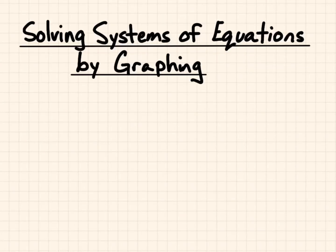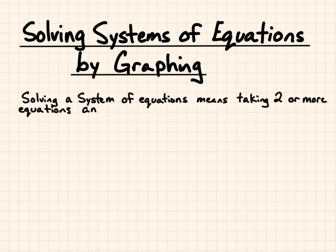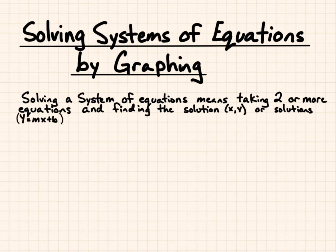This is a tutorial for notes on solving systems of equations by graphing. Solving a system of equations means taking two or more equations and finding the solution — an x and y coordinate, or solutions, that work for both equations, written in the form y equals mx plus b, if a solution exists.